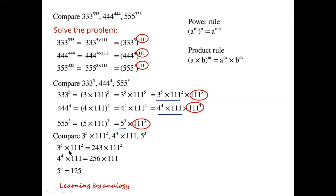3 to the power of 5 times 111 squared equals 243 times 111 squared. 4 to the power of 4 times 111 equals 256 times 111. 5 cubed equals 125.